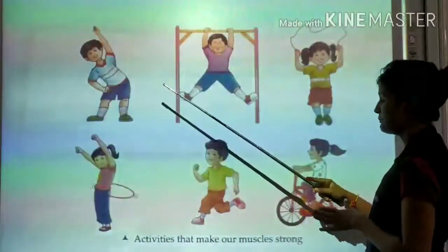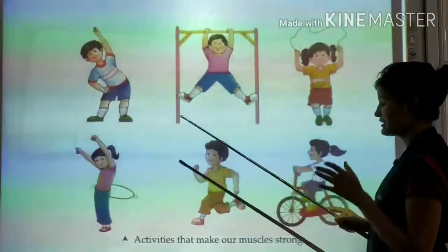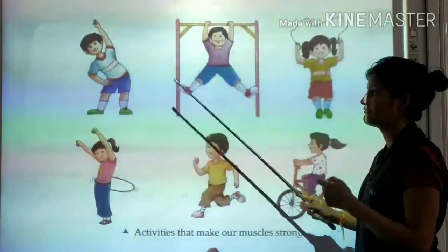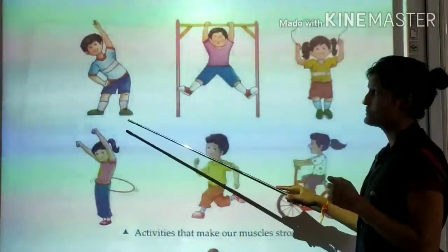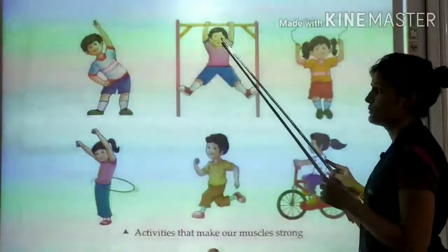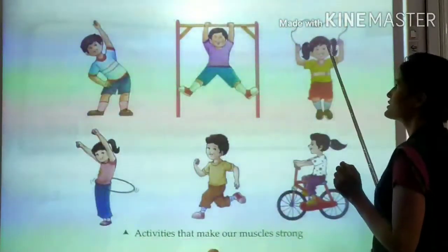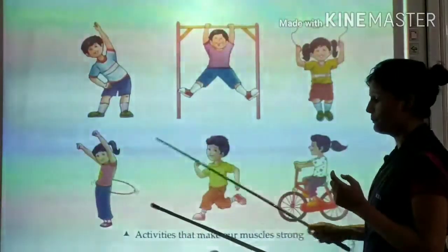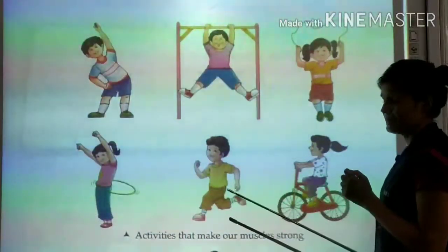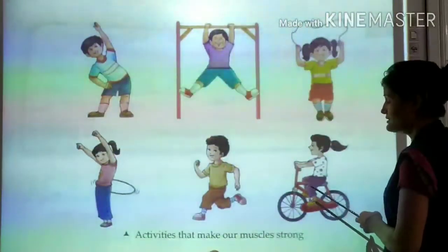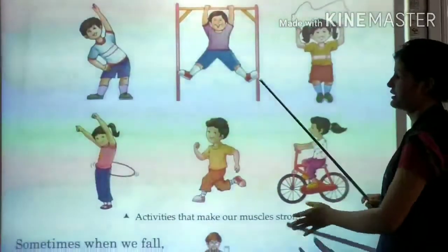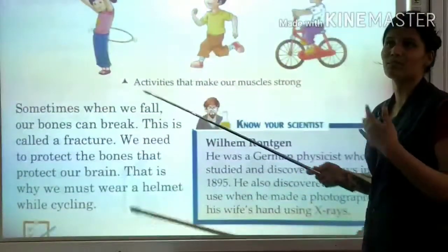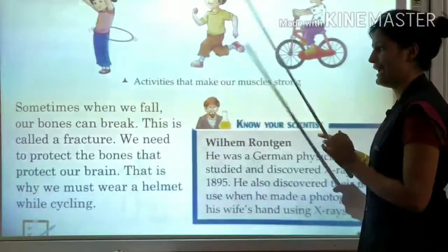Here are some activities that make our muscles strong. We should do all these activities regularly. A boy doing exercise, a girl doing skipping, hula hoop, running, and cycling. All these activities make our muscles, bones, and our body stronger and healthy.